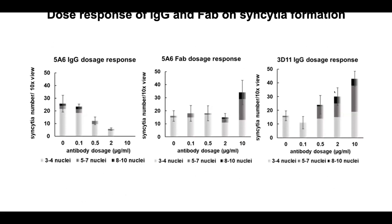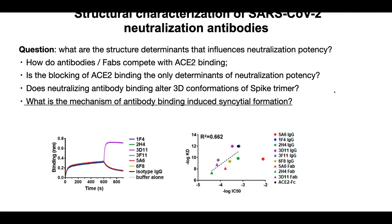Together with what Charlie showed, there are a number of questions we tried to address from structural studies. We know that these neutralizing antibodies compete for ACE2 binding — that's one mechanism of neutralization. But what drives the differences in neutralizing potency? Binding affinity is one factor, but what is the structural basis that influences it? Particularly, if two antibodies have comparable binding affinity but very different potency, what explains that? And what is the mechanism by which antibody binding induces syncytia formation?